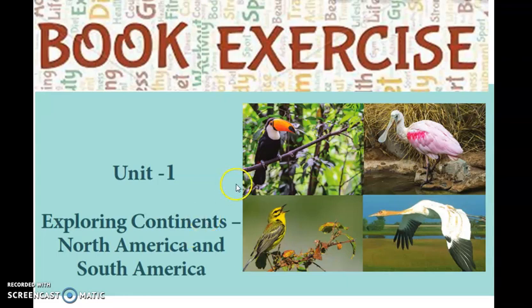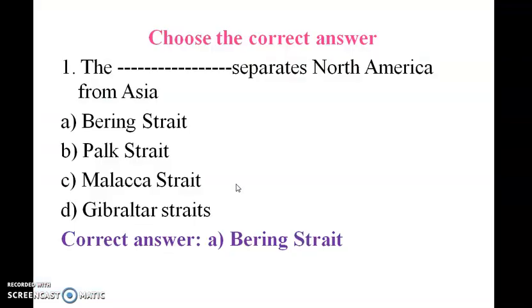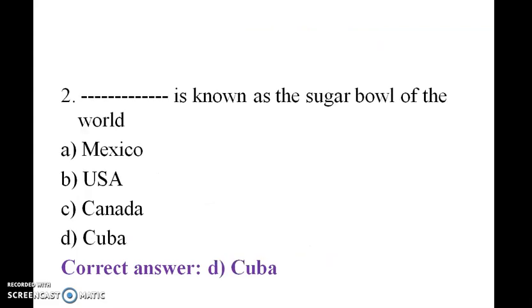First one: choose the correct answer. Dash separates North America from Asia — Bering Strait. Dash is known as the sugar bowl of the world.